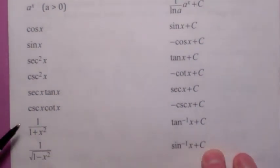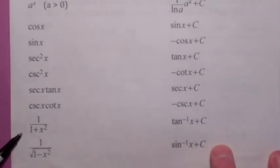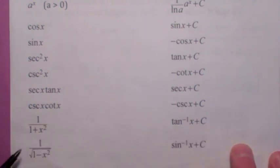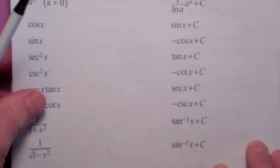And these last two, you should know these two. The most general antiderivative of one over one plus x squared is inverse tangent of x plus C. The most general antiderivative of one over the square root of one minus x squared is inverse sin of x plus C. So know all those rules.